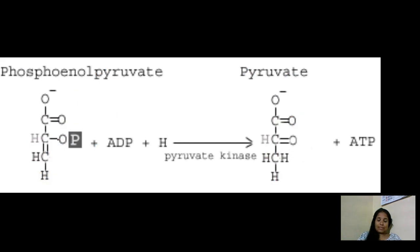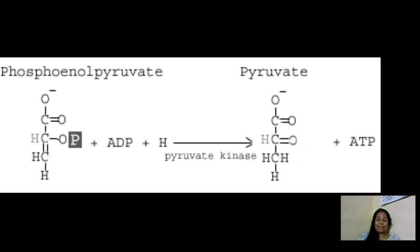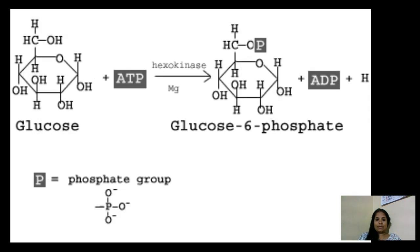The last step of glycolysis is catalyzed by pyruvate kinase. Phosphoenolpyruvate loses one phosphate group, which is added onto ADP. The final products of this reaction are pyruvic acid and ATP.